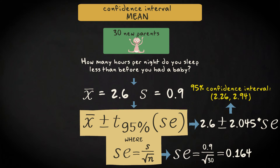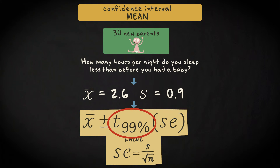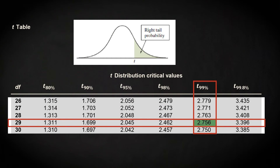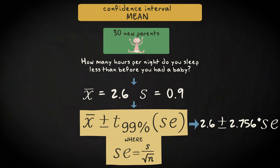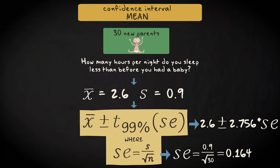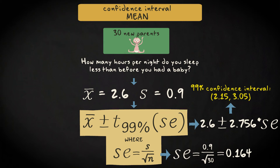If we want to construct an interval with a confidence level of 99%, we simply replace the T-score for the 95% level with the T-score for the 99% level. You can look it up in the table — it's 2.756. The confidence interval is 2.6 plus and minus 2.756 times 0.9 divided by the square root of 30. That leads to an interval from 2.15 to 3.05.